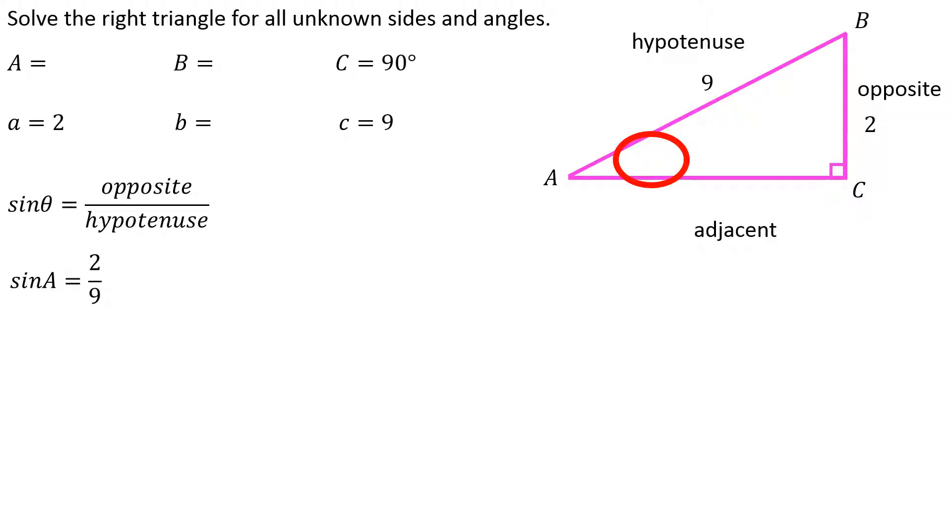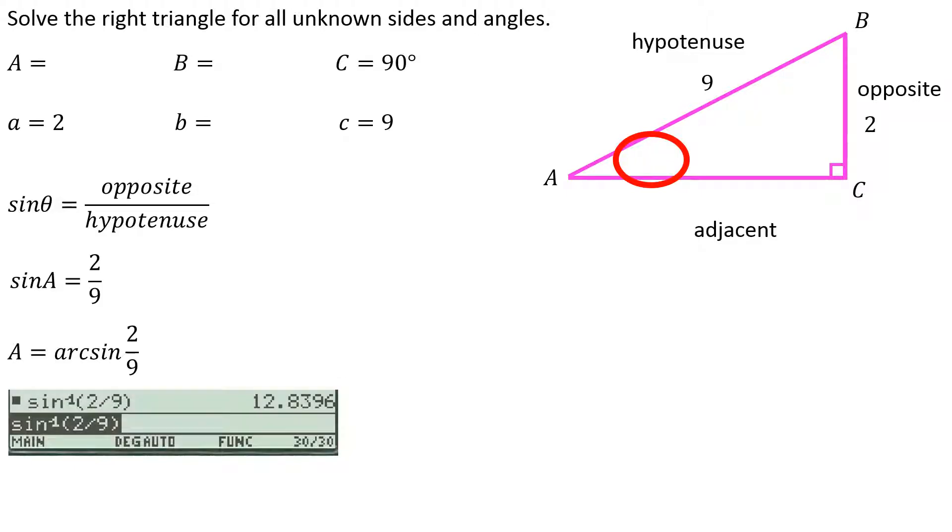So sine of angle A has to be 2/9. So if I actually want the measurement of angle A, I have to find the arcsine of 2/9. Grab a calculator, make sure I'm set for degrees, it comes to be about 12.8 degrees. I can add that to my diagram, I can add that into my answer display there.